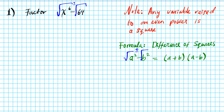Let's apply this formula. The square root of X to the sixth — when you take the square root, you divide the power by two — gives X to the third. The square root of 64 is eight. So we get (X to the third plus 8) times (X to the third minus 8), applying the difference of squares factorization formula.